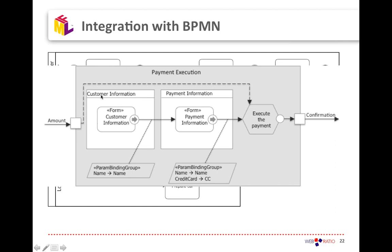In the payment execution IFML module you have an input port and an output port. The input port accepts the amount of money to be paid, then you describe the user interaction for executing the payment, and the output port produces the confirmation message received back from the payment operation. This is already very well covered in WebRatio, where you can define business processes and then zoom in on each activity to see the user interaction model for that activity.